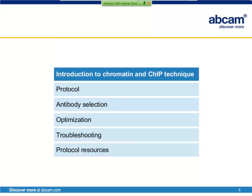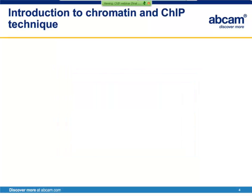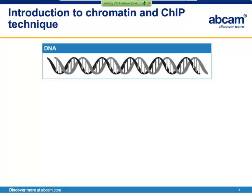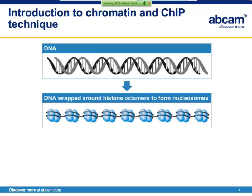Let's start by introducing chromatin and how ChIP can be used. The function of chromatin is to package DNA so it fits within the cell, strengthen DNA to assist with mitosis and meiosis, and help control gene expression. In eukaryotes, chromatin is a complex of DNA, RNA, and proteins. The major protein component is histones, although many other chromosomal proteins also play a prominent role. 147 base pairs of DNA is wrapped around the histone octamer to form the fundamental unit of chromatin, the nucleosome.